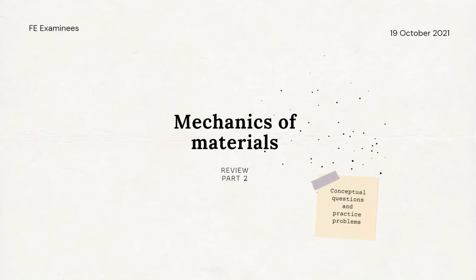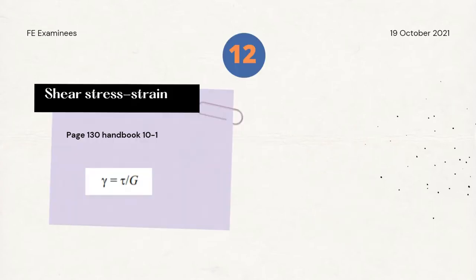Today we will continue our mechanics of materials review, part 2. The shear strain formula is similar to the formula of uniaxial loading, except that here the Young's modulus E is replaced by the shear modulus J. So here gamma equals tau over J, where gamma is the strain, tau is the shear stress, and J is the shear modulus.